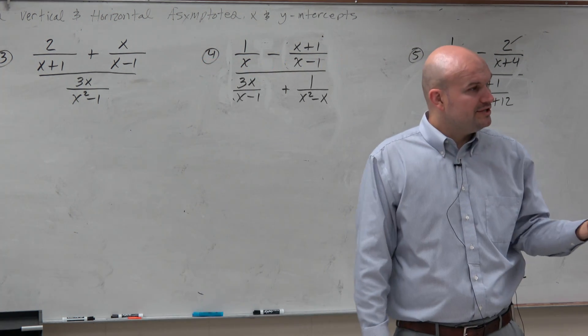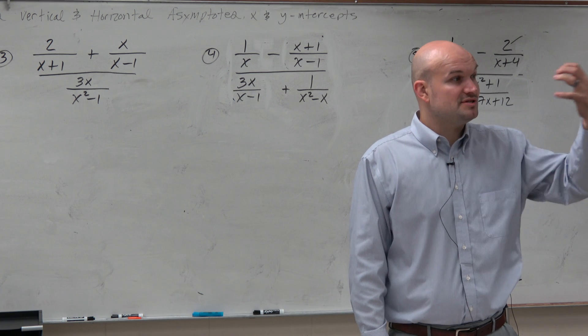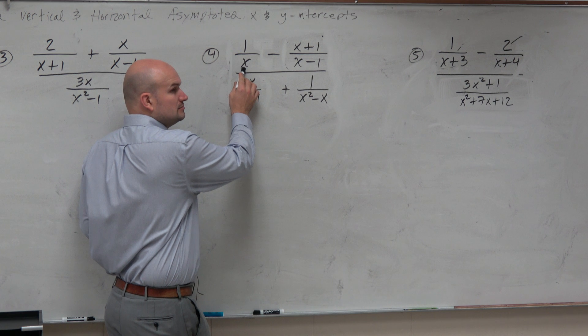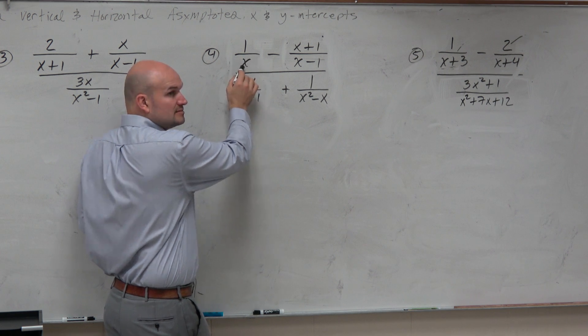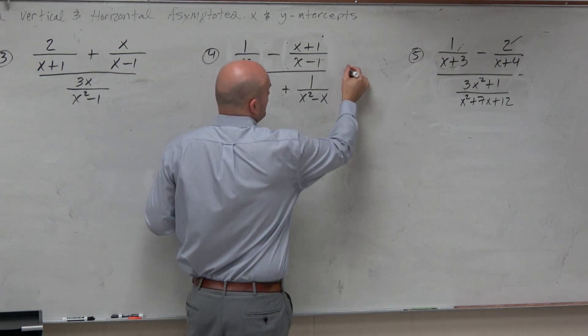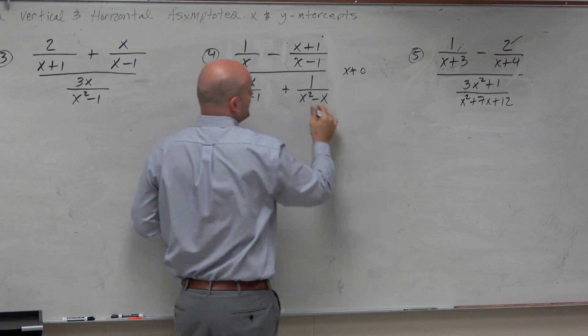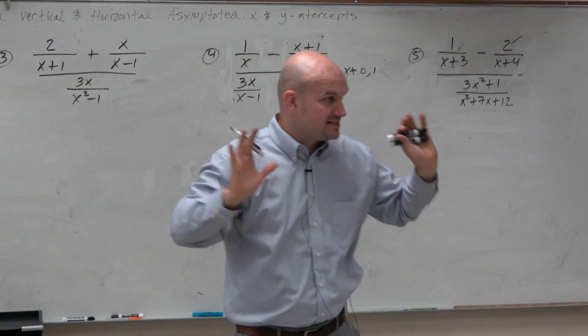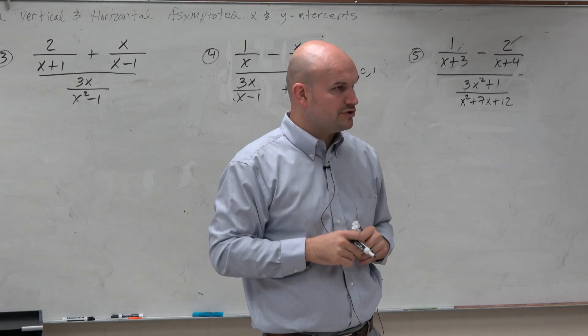So immediately, what we can do is, we know there's some restrictions. We know there's some values that x cannot equal. Because if x equals 0, that goes to 0, right? So we know that right now, x cannot equal 0. And we know x cannot equal 1. So immediately, just looking at the problem, I know x cannot equal 0 and 1. So those are going to be two restrictions.